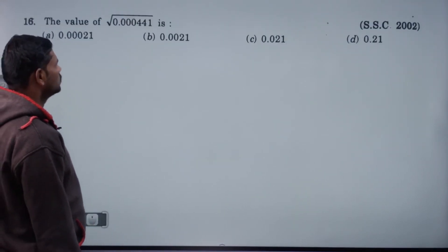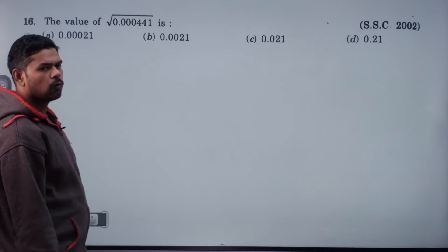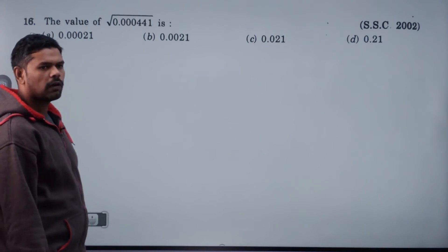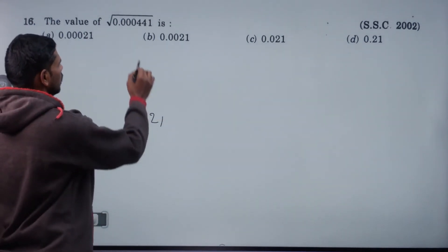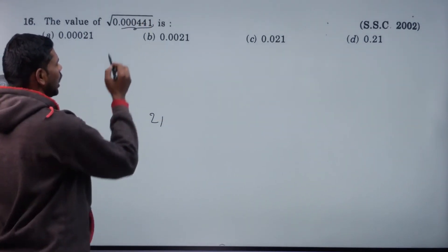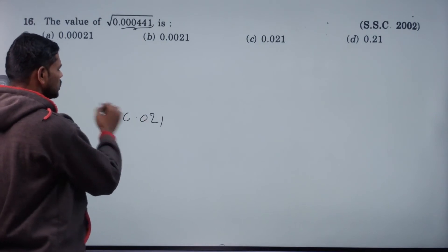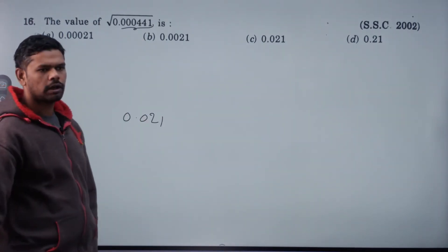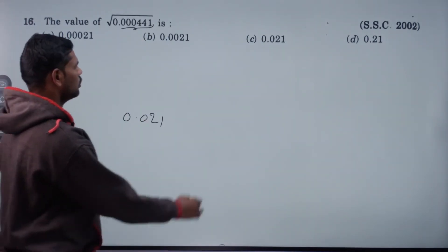Value of root of 0.000441. 441 square root is 21. For the decimals, there are 6 decimal places, so we take 3. Answer is 0.021.